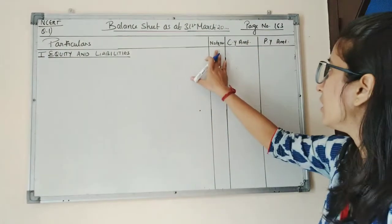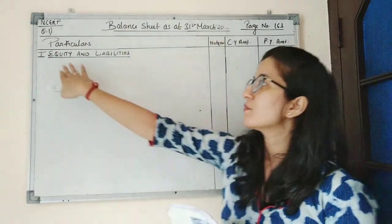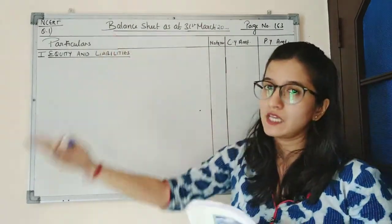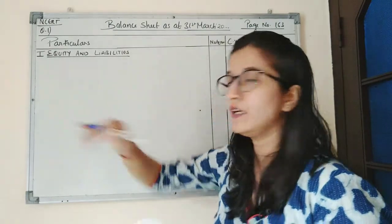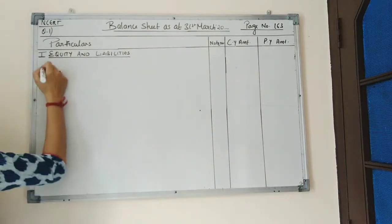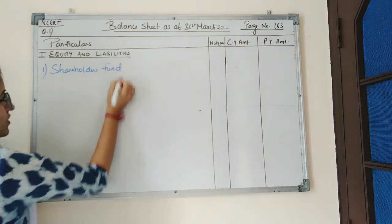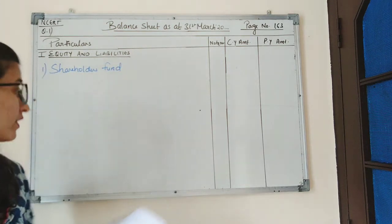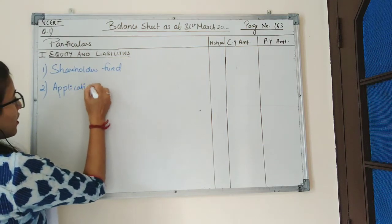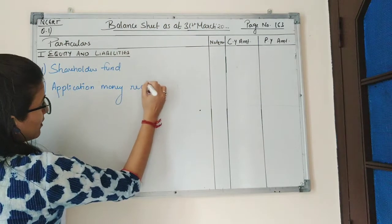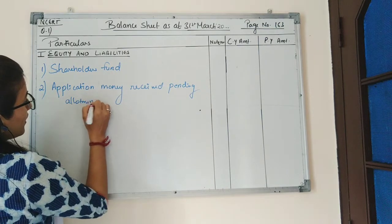The format of the balance sheet has columns for particulars, note number, current year amount, and previous year amount. In the balance sheet there are two parts. The first part is equity and liabilities — this is a major heading. Under equity and liabilities, first is shareholders fund — there is no shareholders fund given in this question. Second is share application money received pending allotment — there is also none in this question.